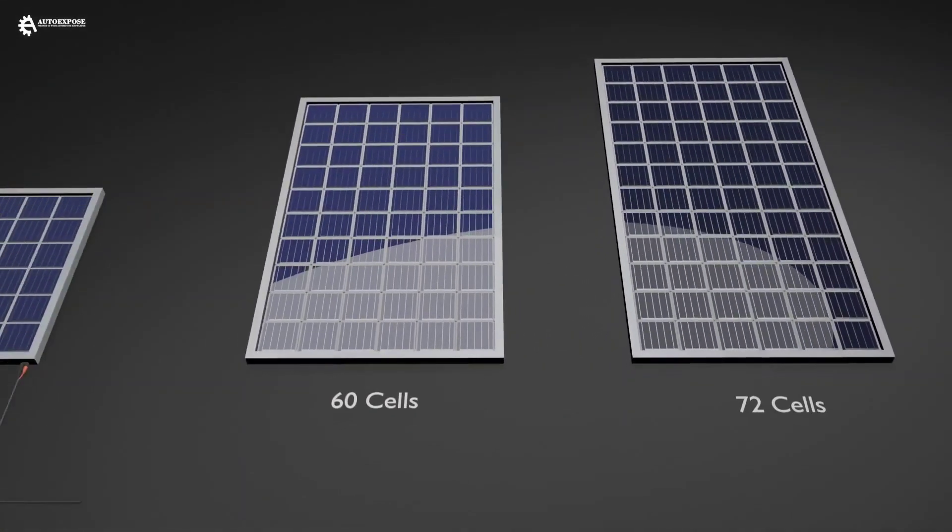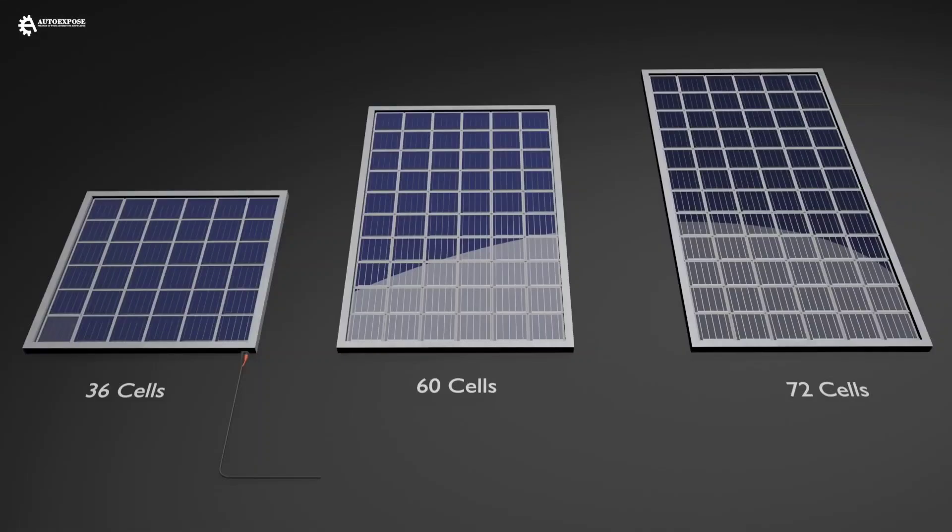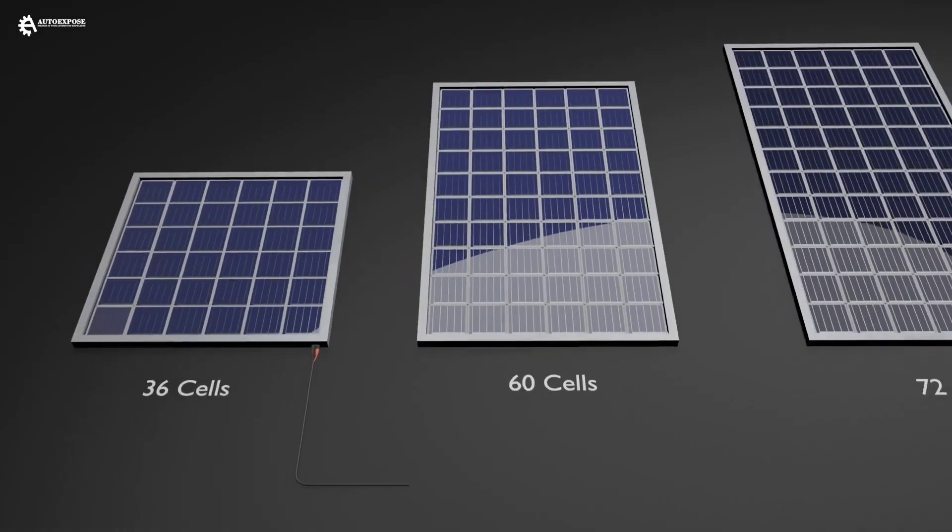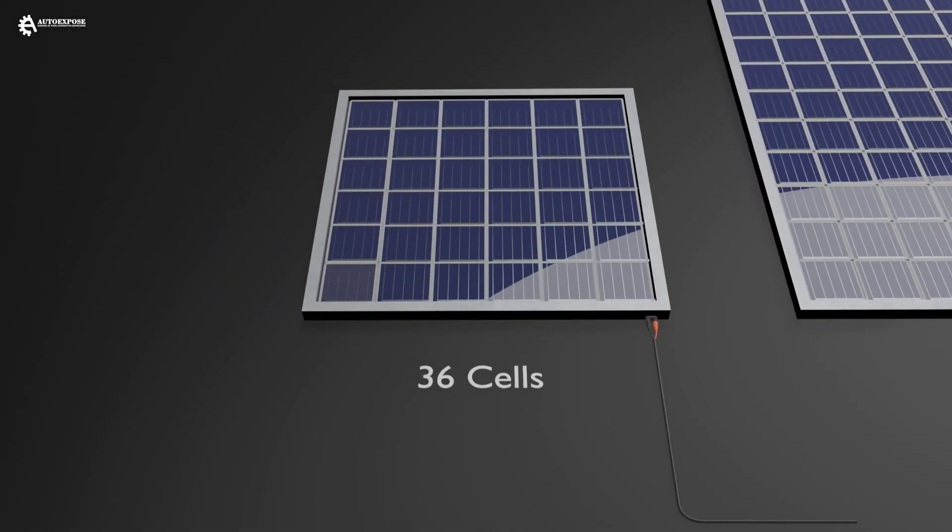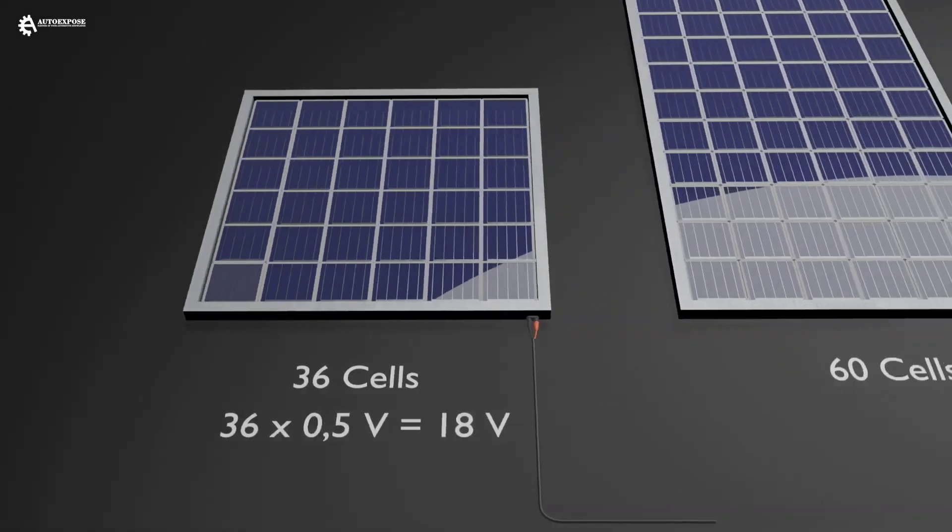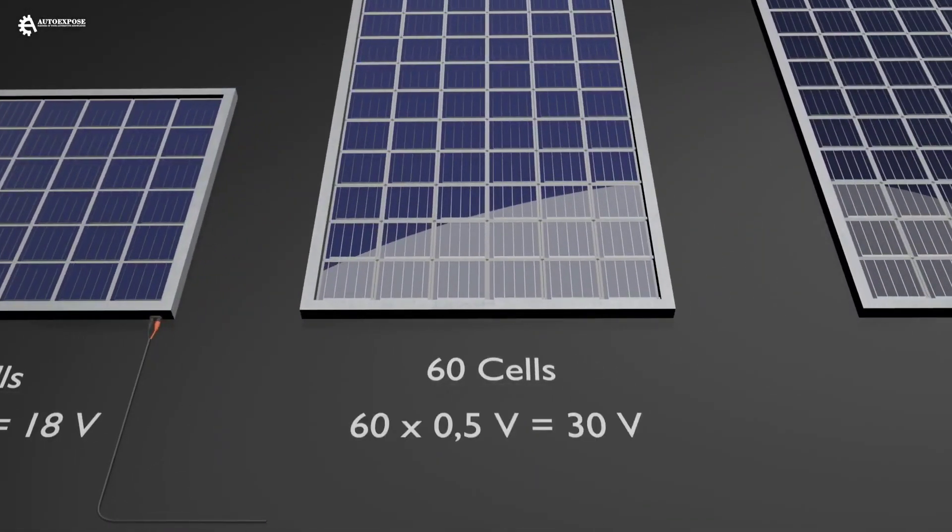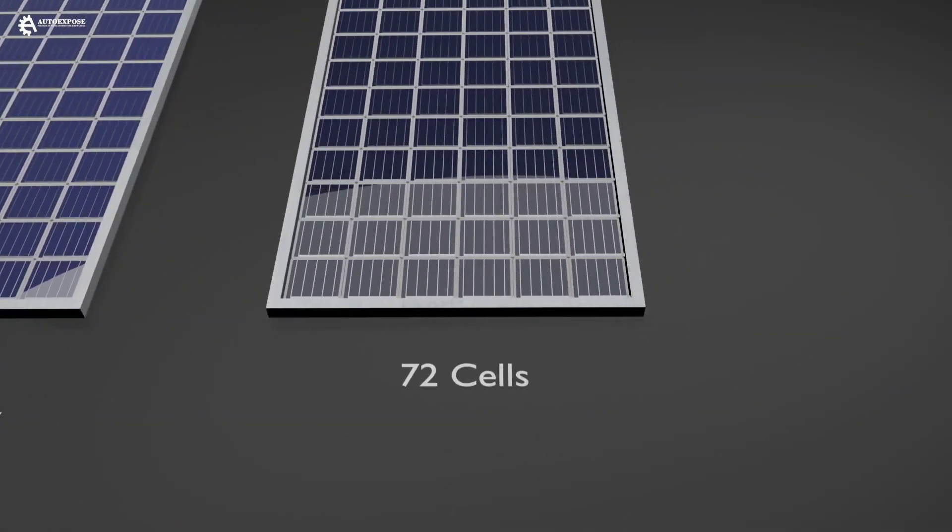The electricity generated by solar panels varies depending on the intensity of the light that hits it. Under normal light conditions, each cell can produce DC electricity with a voltage of 0.5 volts, with a current of 8 amperes. That is, if arranged in series, then the 36 cells will produce 18 volt 8 amperes. The capacity of 60 cells produce 30 volt 8 amperes. And 72 cells produce 36 volt 8 ampere.